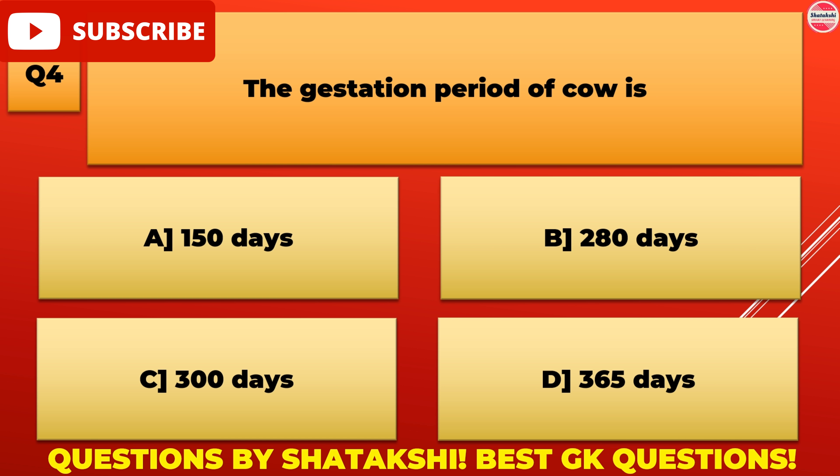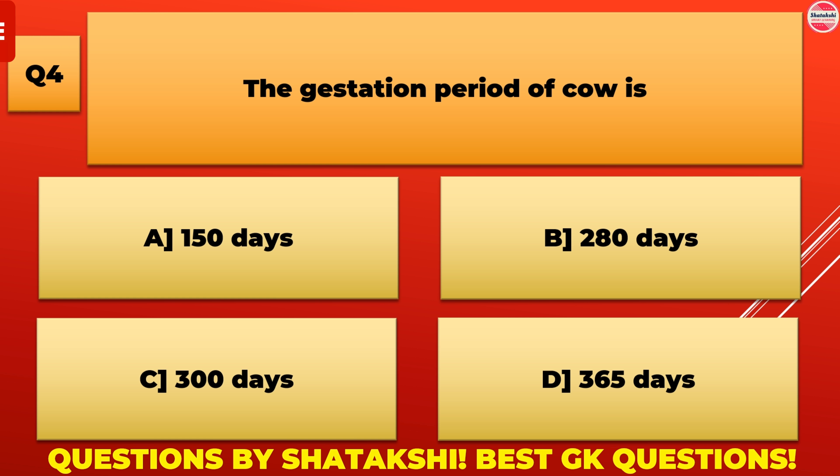The gestation period of cow is: A. 150 days, B. 280 days, C. 300 days, D. 365 days. B. 280 days is the correct answer.